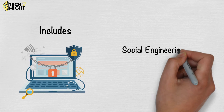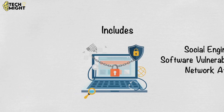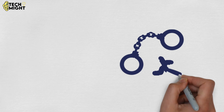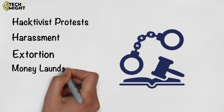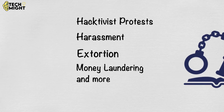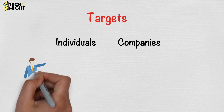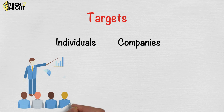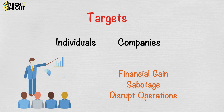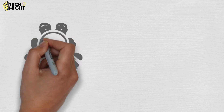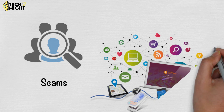Cybercrime includes common cybersecurity threats like social engineering, software vulnerability exploits, and network attacks. But it also includes criminal acts like activist protests, harassment, extortion, money laundering, and more. Cybercrime targets both individuals and companies. Typically, attackers target businesses for direct financial gain or to sabotage or disrupt operations.